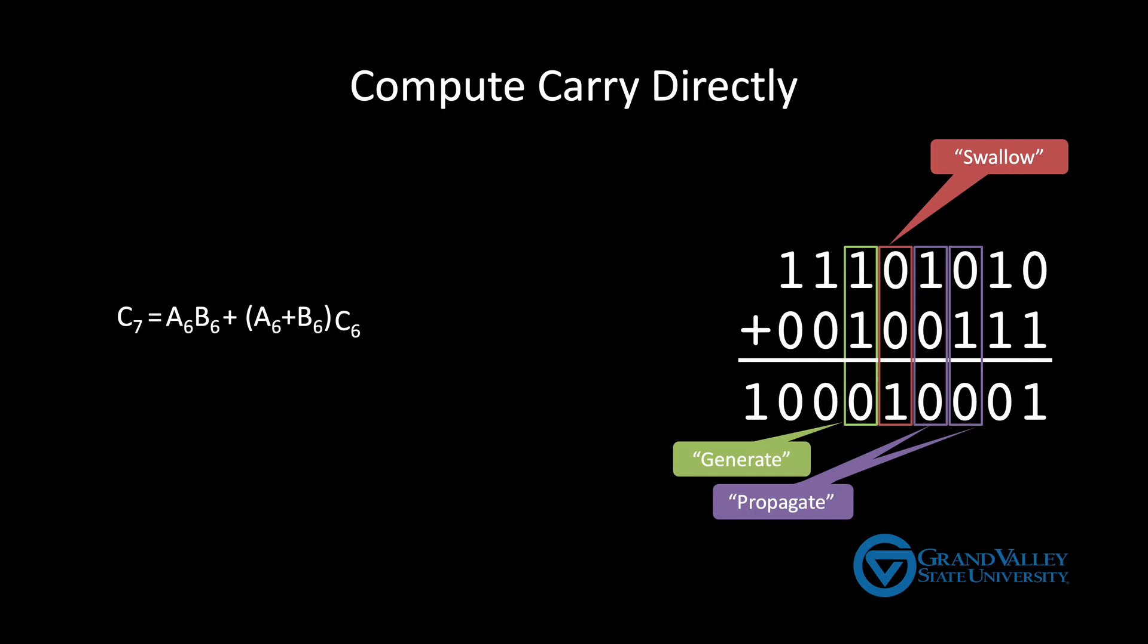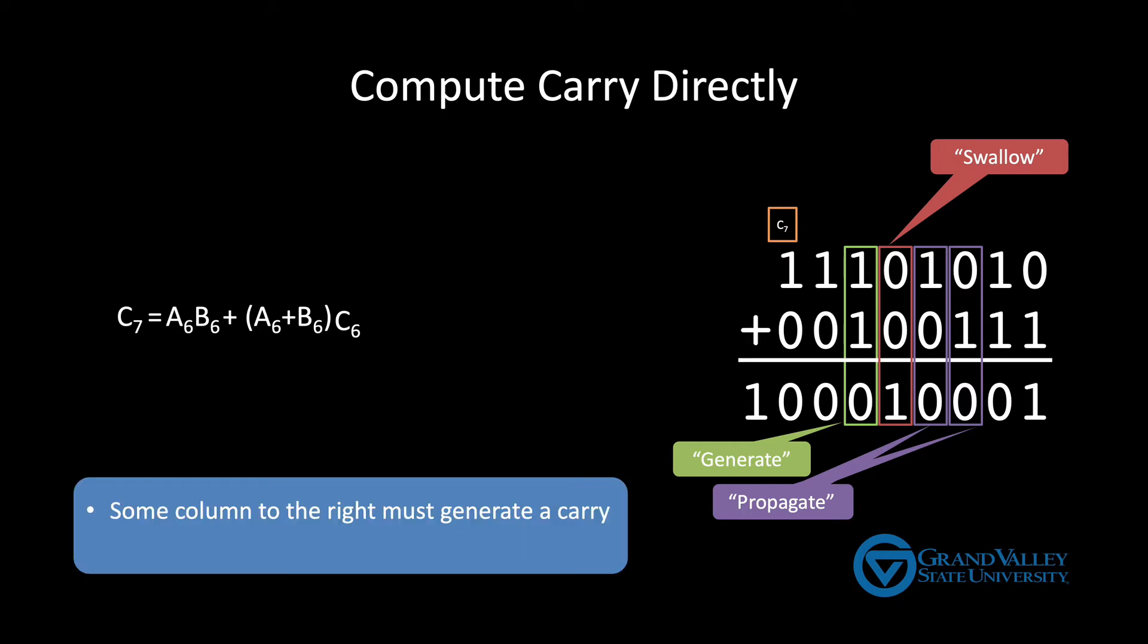So in this context, what must happen in order for there to be a carry into column seven? Well, at a high level, two things must happen. First, some column to the right must generate a carry, and then all of the columns between must propagate that carry. So let's see some examples.